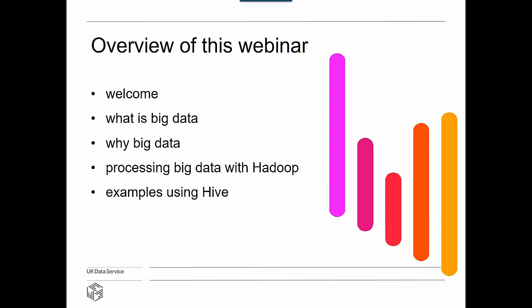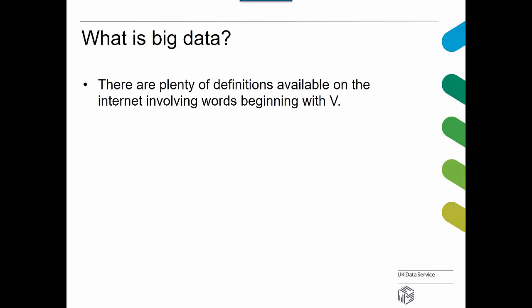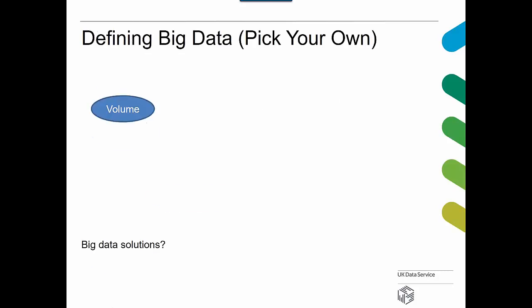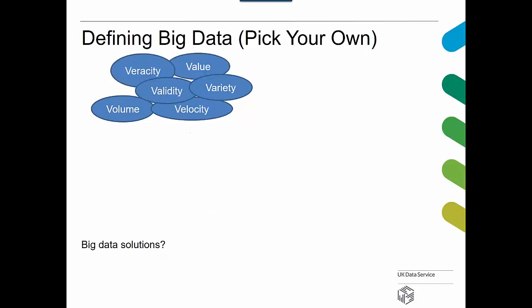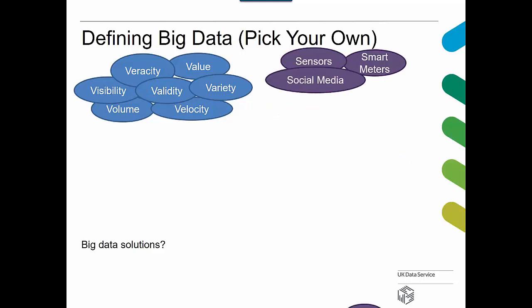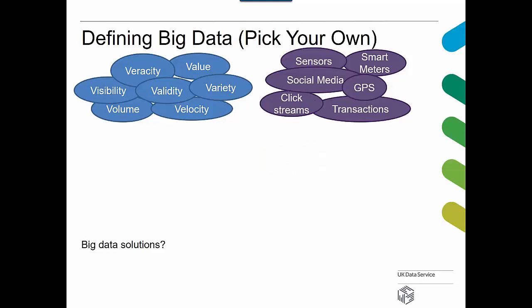So, what is big data? You'll have heard of all the definitions starting with the word V. It started off with three Vs — volume, velocity, and variety — and then people started adding more, so there are seven there. We also need to consider where this data is coming from: various sources of big data including social media, GPS, and modern systems for generating data.